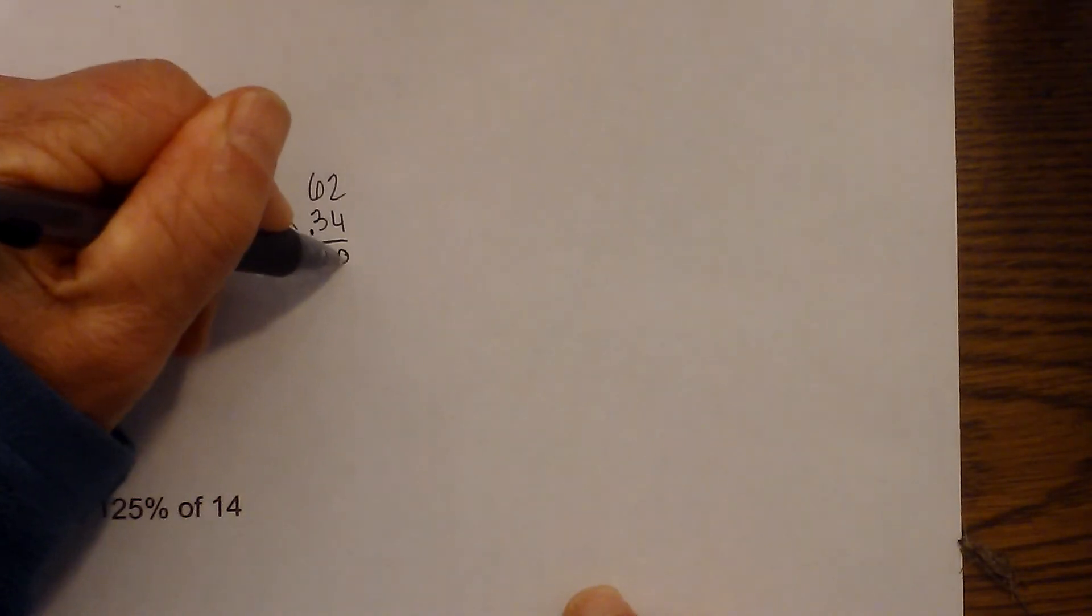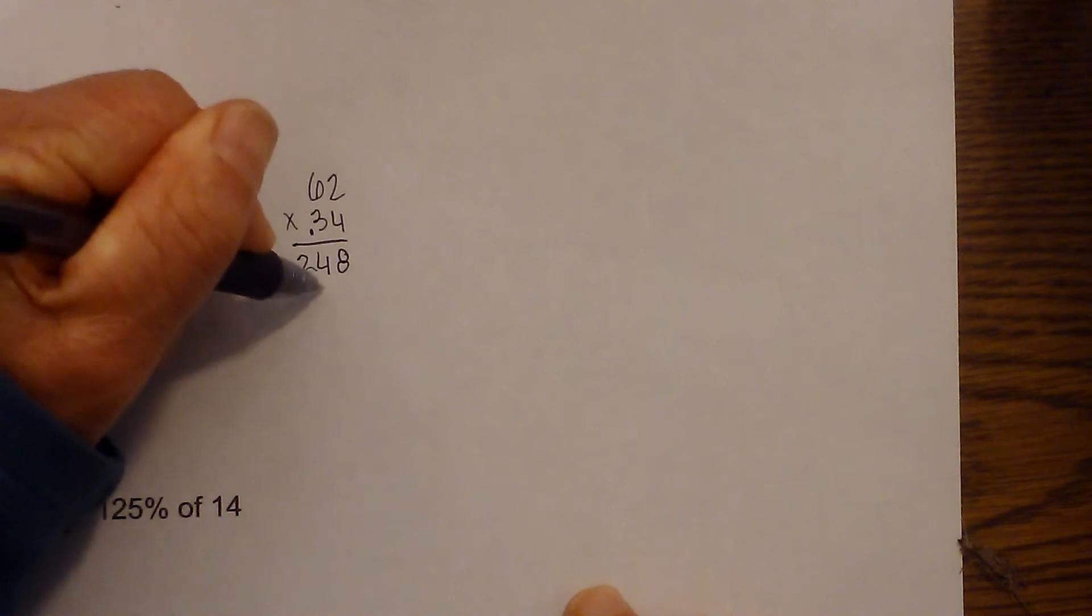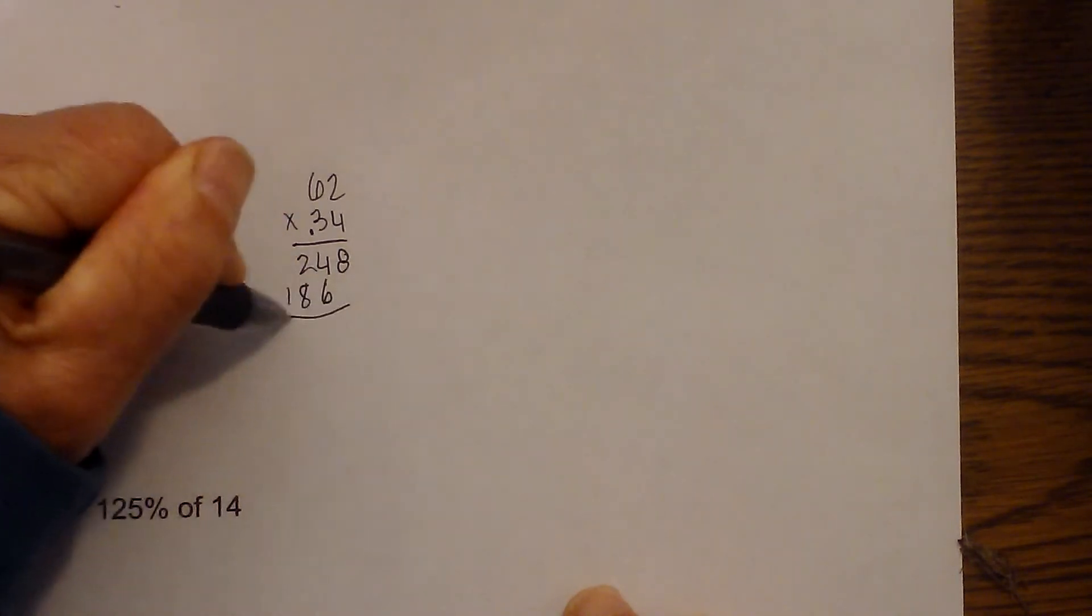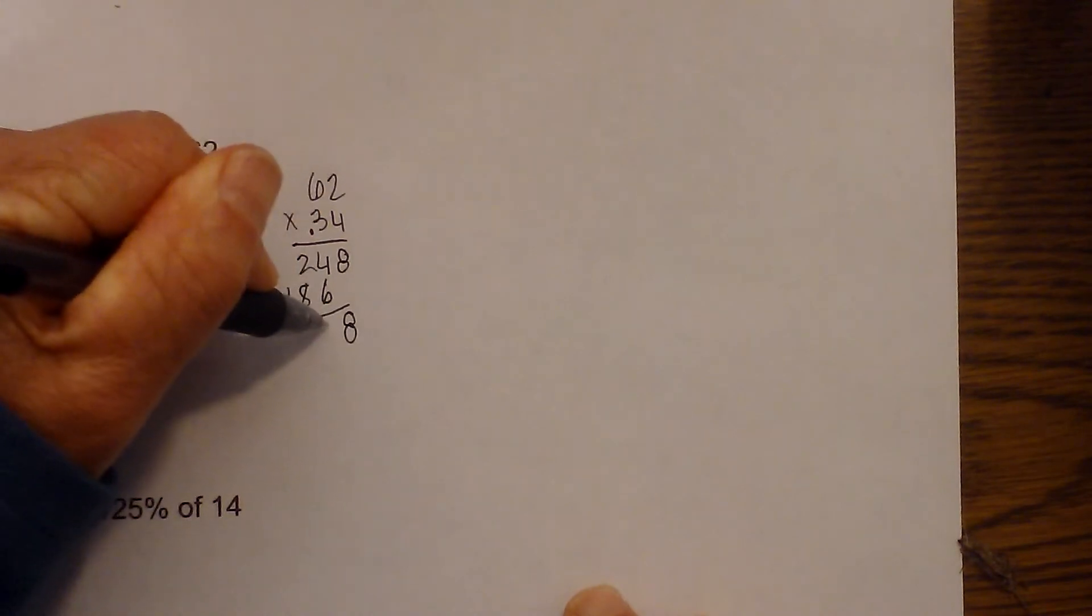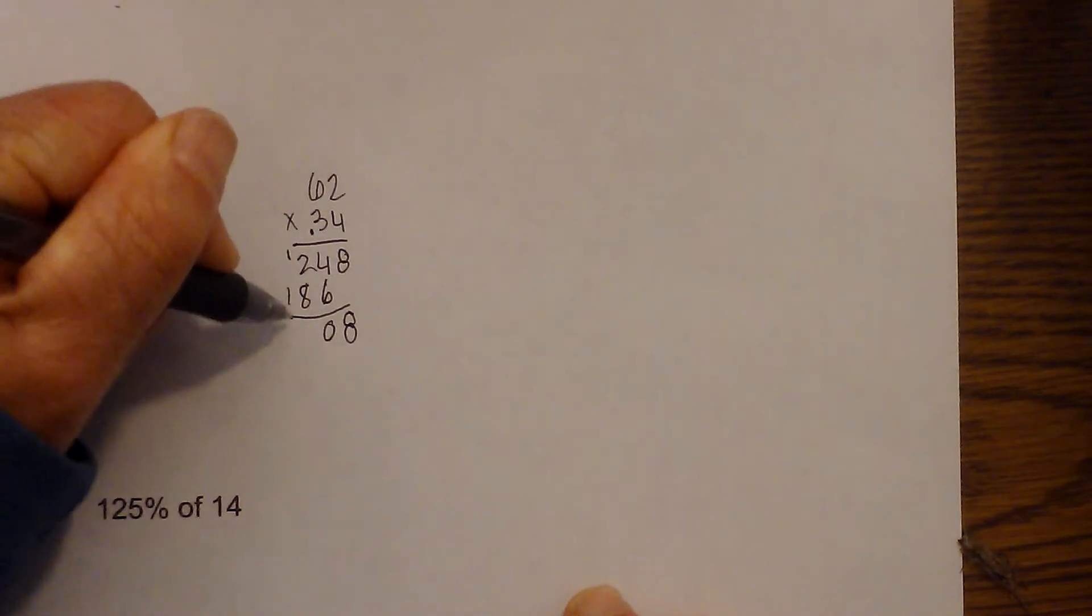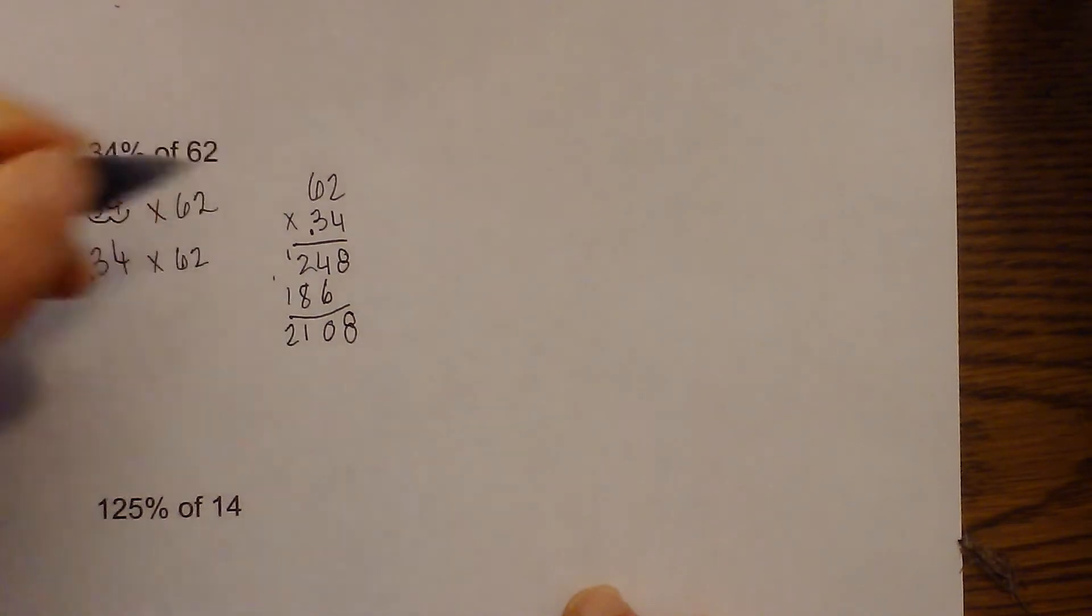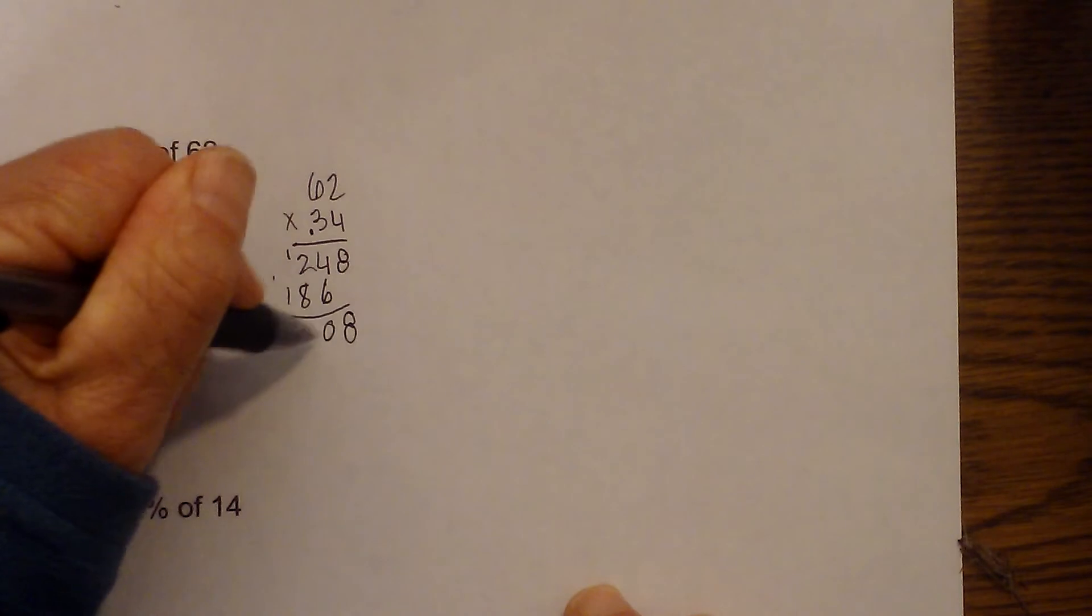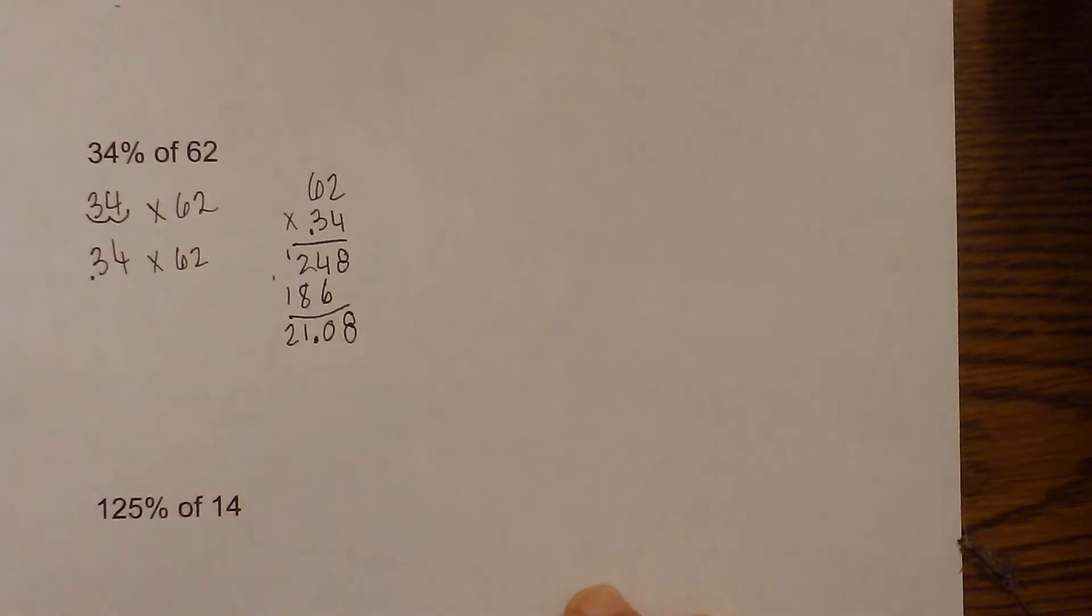So now we have 8, 24, 6, 18. Bring down the 8. This becomes 10. Carry one over. This becomes 11. Carry one over. That becomes 2108. But I need two decimal places to the right. And so there we have.